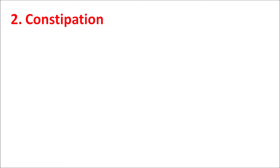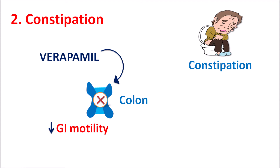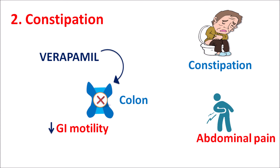Second: constipation. This is mainly observed with verapamil, which blocks L-type calcium channels present on the colon, reducing gastrointestinal motility. Therefore, constipation is a prominent side effect of verapamil and is less observed with dihydropyridines and diltiazem. Other calcium channel blockers can produce abdominal pain as an additional side effect.